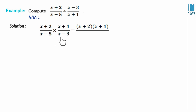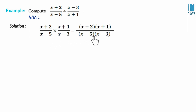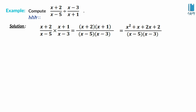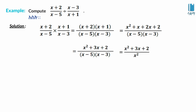Using this law, we multiply (x + 2) by (x + 1) in the numerator, and (x − 5) by (x − 3) in the denominator. For the numerator: x·x = x², x·1 = x, 2·x = 2x, 2·1 = 2, giving x² + 3x + 2. For the denominator: x·x = x².